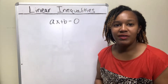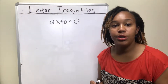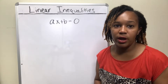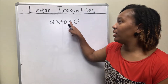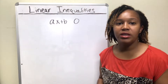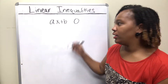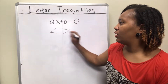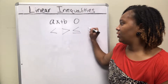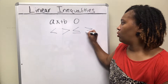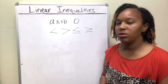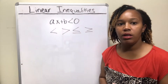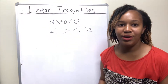Linear inequalities are really similar to linear equations, except you take away the equal sign and replace it with the inequality symbol. The inequality symbol is a less than, greater than, less than or equal to, or greater than or equal to symbol. So you take away the equal sign, replace it with one of those, and you have a linear inequality.